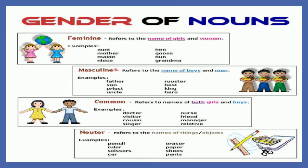Next is masculine gender. Masculine gender refers to the name of boys and men. For example: father, son, priest, uncle, rooster, roast, king, hero.